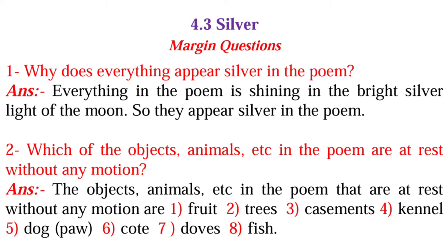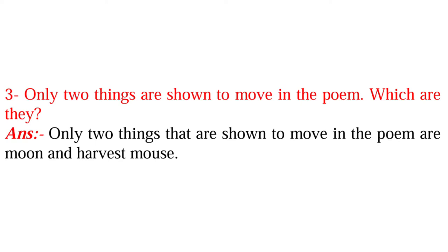The second question is: which of the subjects, animals, etc. in the poem are at rest without any motion? The answer is, the objects and animals in the poem that are at rest without any motion are: 1st fruit, 2nd trees, 3rd casements, 4th kennel, 5th dog paw, 6th coat, 7th doves, 8th fish.